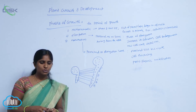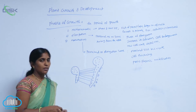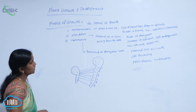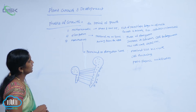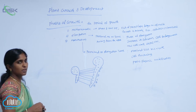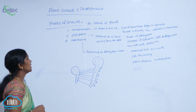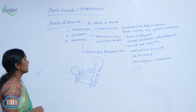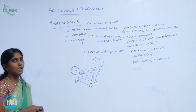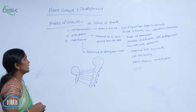Phases of growth. The period of growth is generally divided into three phases: the meristematic phase, elongation phase, and maturation phase.